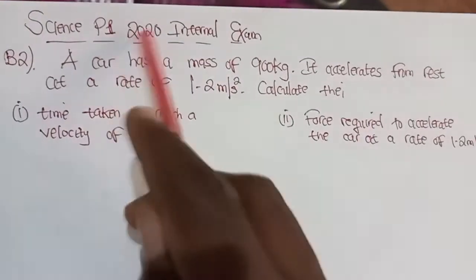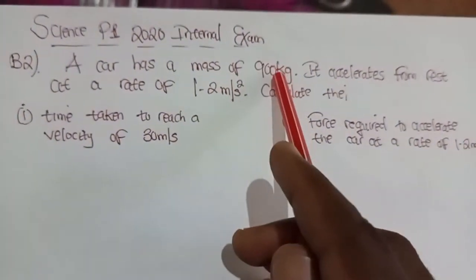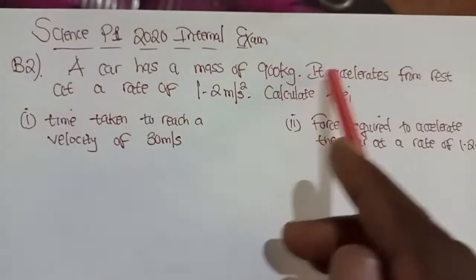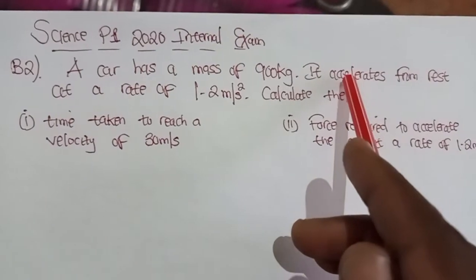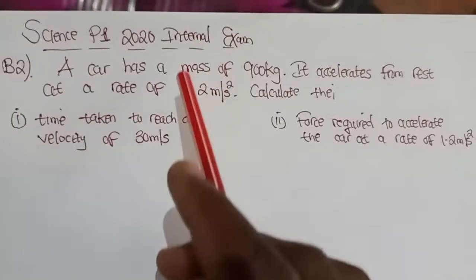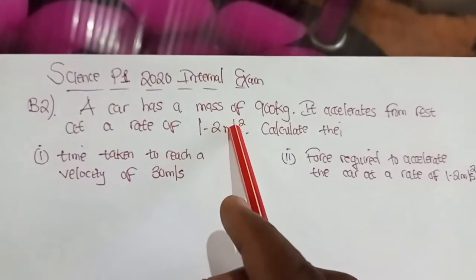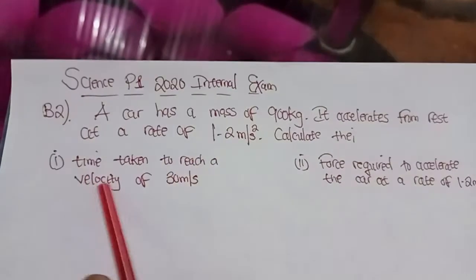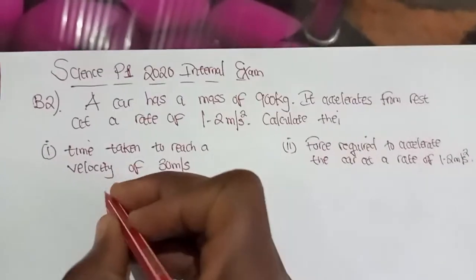We're going to find that a car has a mass of 900 kg — this 900 kg is the value for the mass. And then it accelerates; this word brings in the understanding of acceleration, and the value has been given as 1.2 m per second squared. Calculate the time taken to reach — so the velocity has been given — so we're going to involve a formula.